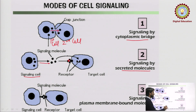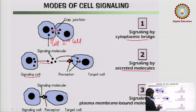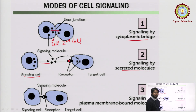The third mode is signaling by plasma membrane-bound molecule. In this case, the signal molecule itself is present on the cell — just like the receptor which is present on the cell membrane. So this signal molecule on one cell will bind to a receptor present on another cell, and they both communicate with each other.